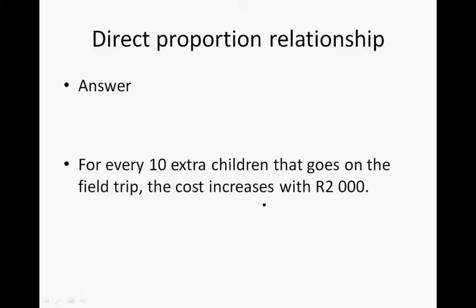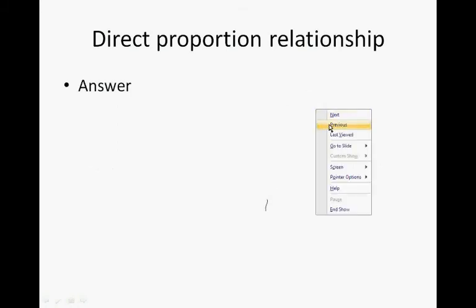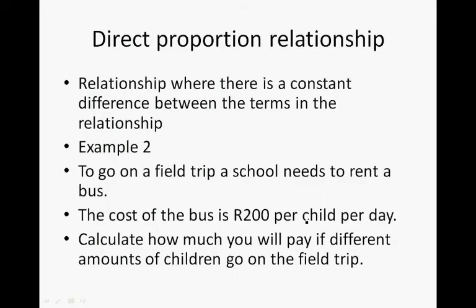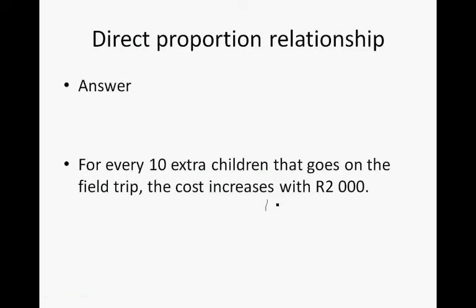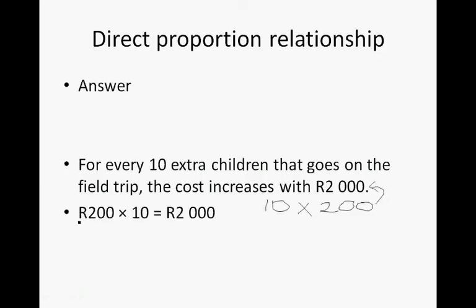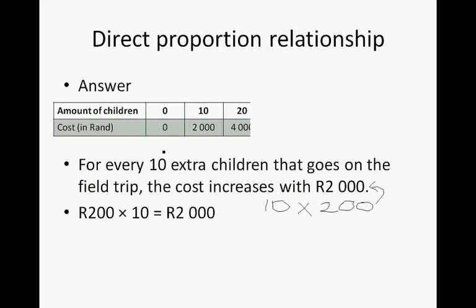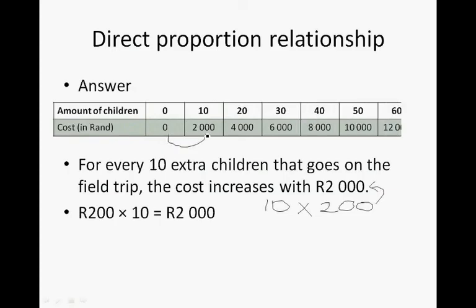It costs R200 per child. To get to that R2,000, we take 10 and multiply it by 200. Ten multiplied by 200 gives us R2,000. When we fill the table, we have a R2,000 gap for every 10 extra children. This is why this is a direct proportion relationship — there is a R2,000 jump between each group of 10 children. If the table went 1, 2, 3, 4, 5 children, we would have had a R200 gap instead.